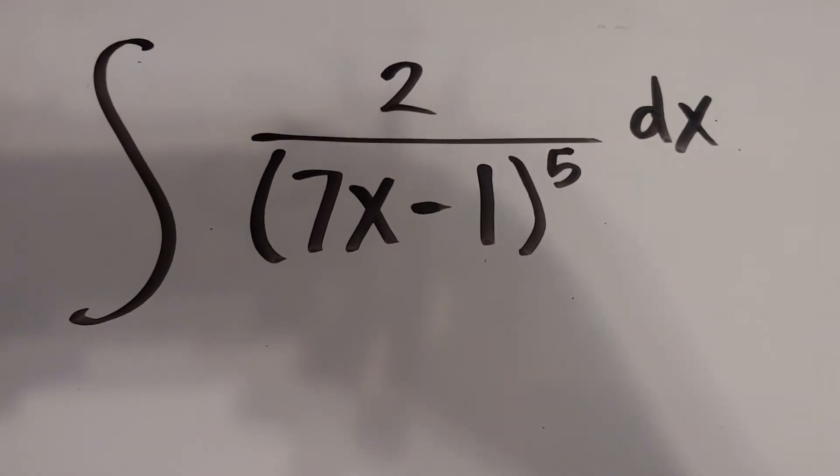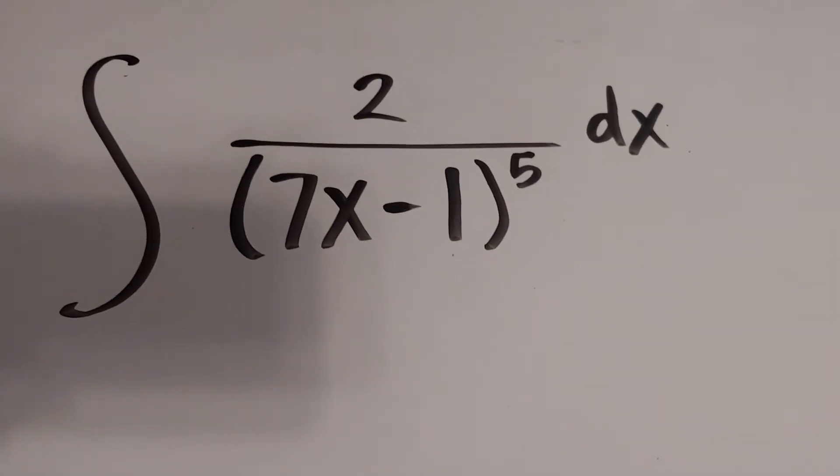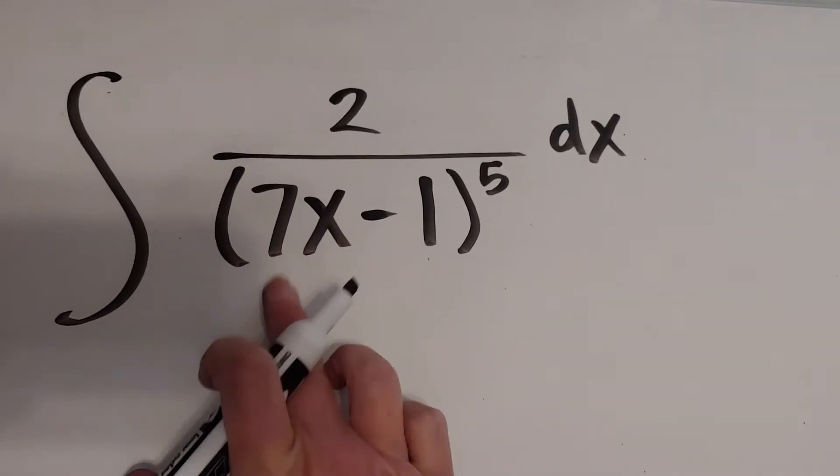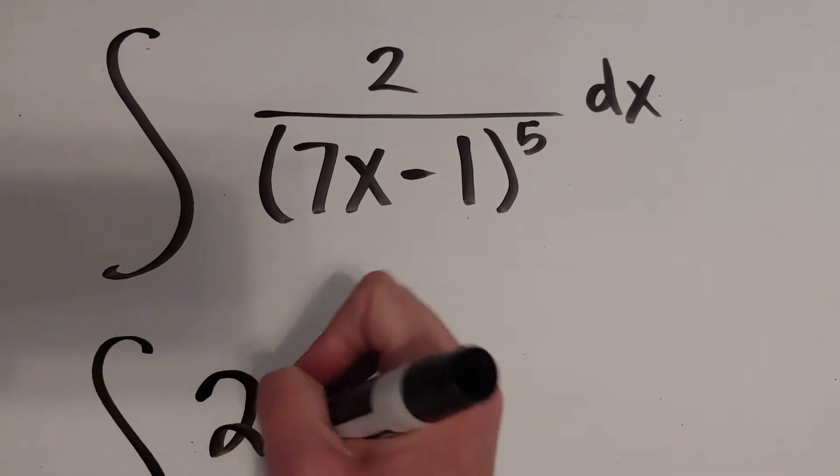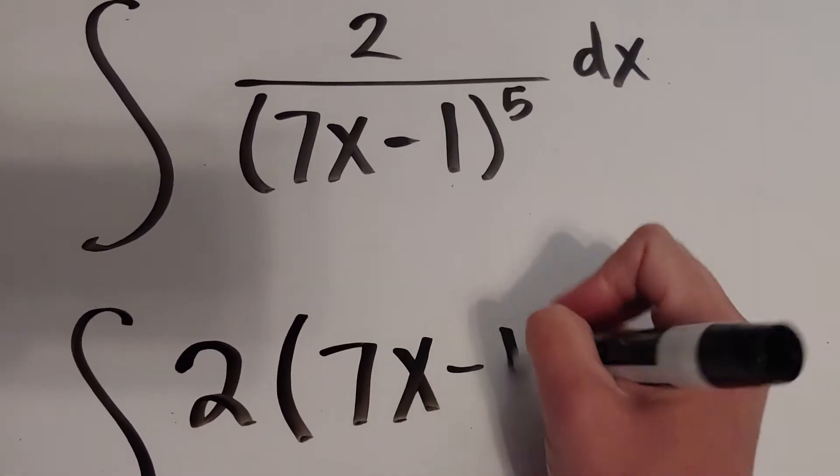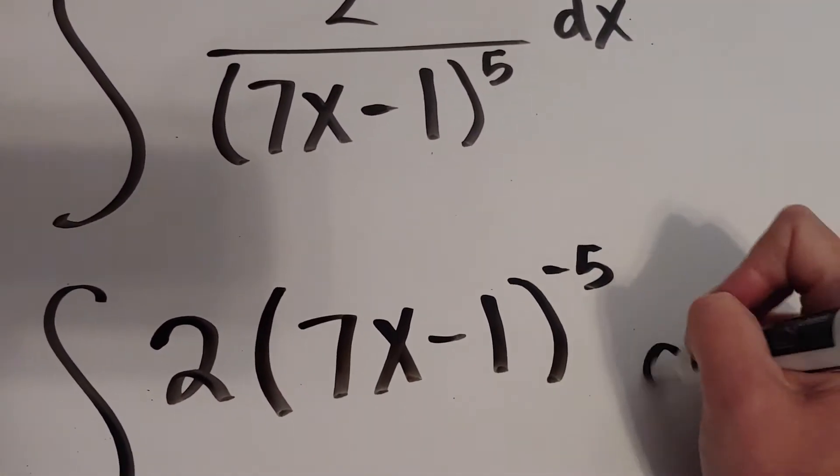Here's our last example of a u-substitution that is not a perfect trade. As you can see, I have stuff in the denominator with an exponent, so probably the first thing I'd want to do is bring up that stuff upstairs and write it as a negative exponent.